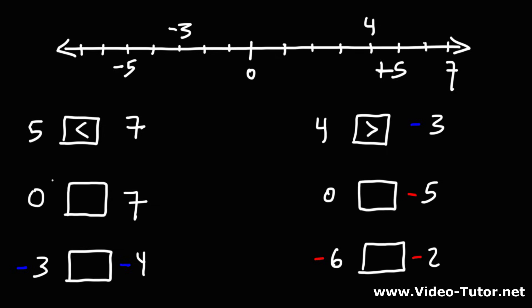Looking at our third example, which one is greater, 0 or 7? Positive numbers are always greater than 0. They will always be to the right of 0 on the number line. So we need to write it this way. 0 is less than 7, or 7 is greater than 0.